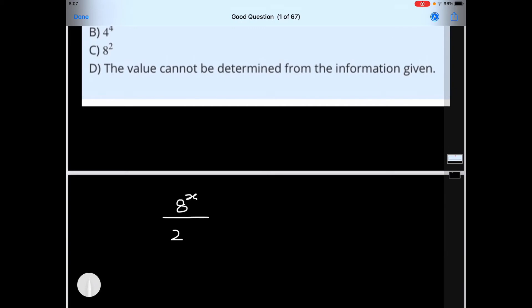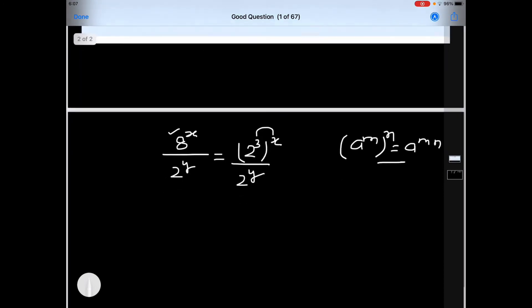8 raised to the power of x divided by 2 raised to the power of y. We know 8 is equal to 2 raised to the power of 3 whole raised to the power of x divided by 2 raised to the power of y. And we know a raised to the power of m whole raised to the power of n is equal to a raised to the power of mn. These powers will be multiplied. So it will be 2 raised to the power of 3x divided by 2 raised to the power of y.